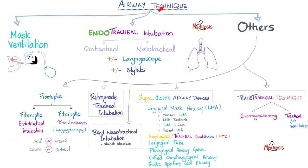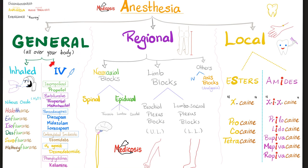There are many techniques to manage the airway: mask ventilation, endotracheal intubation, and others such as fiber optic, retrograde tracheal intubation, blind nasotracheal intubation, supraglottic airway devices, and transtracheal techniques such as tracheostomy or cricothyroidotomy.